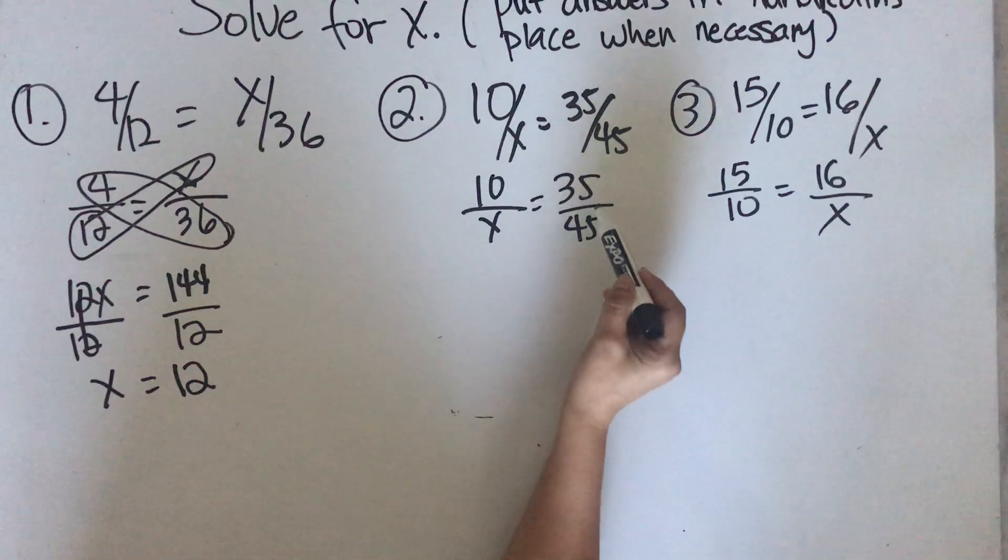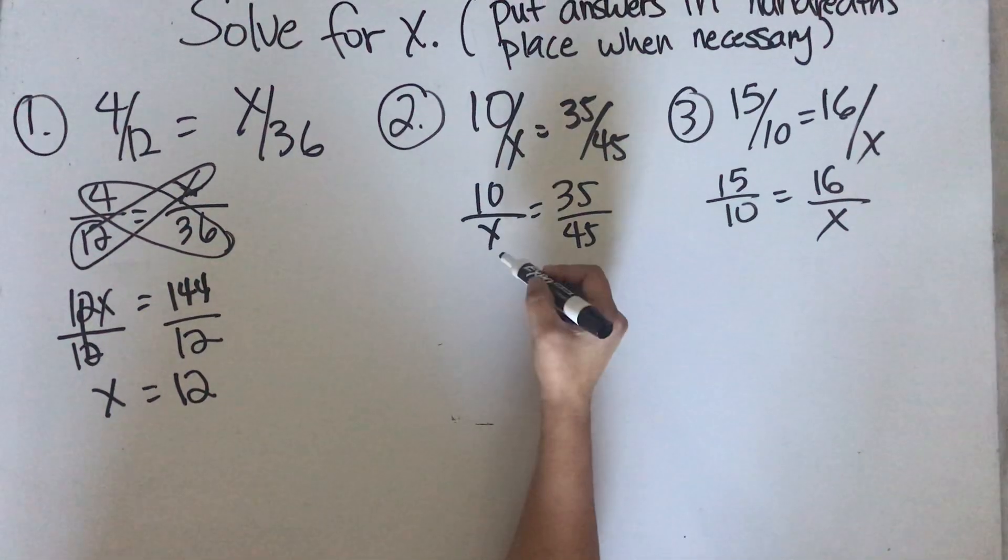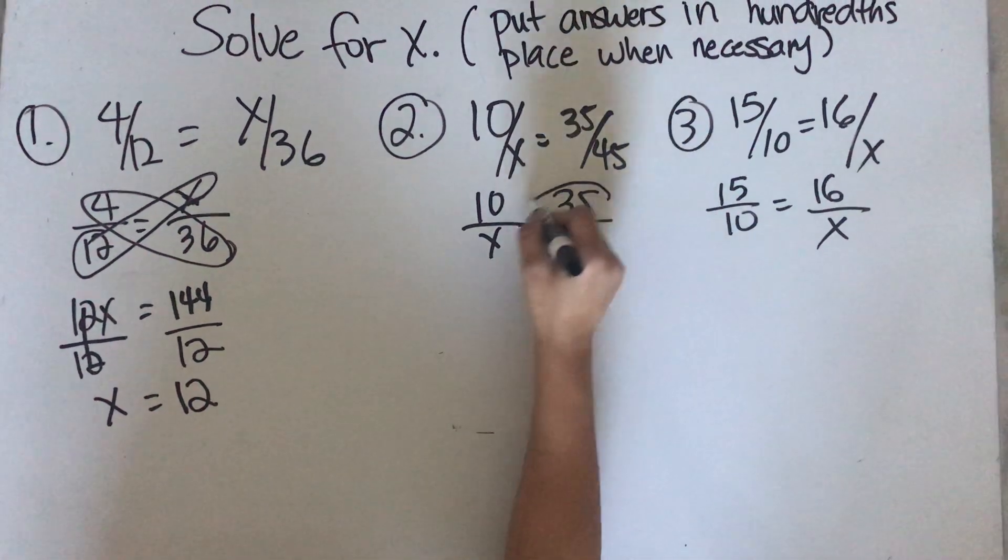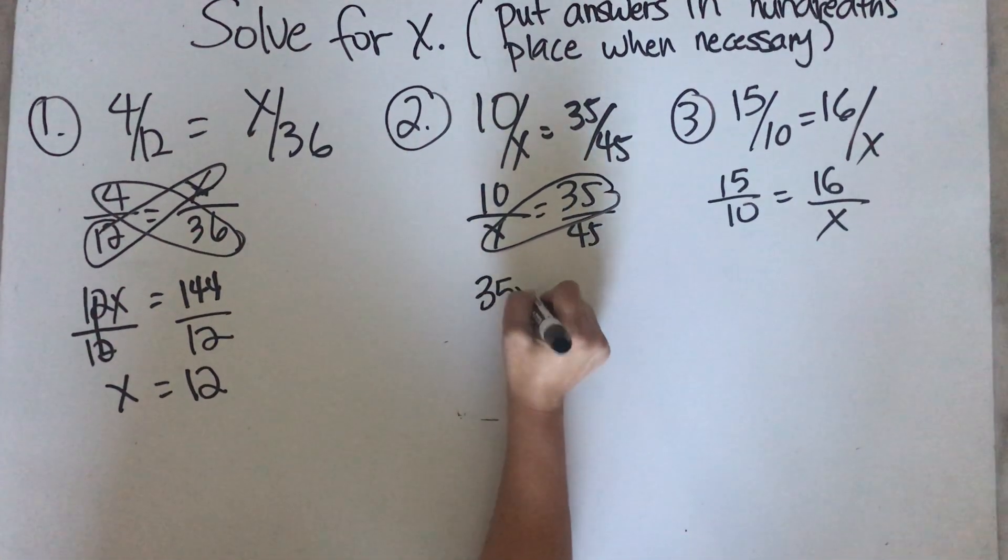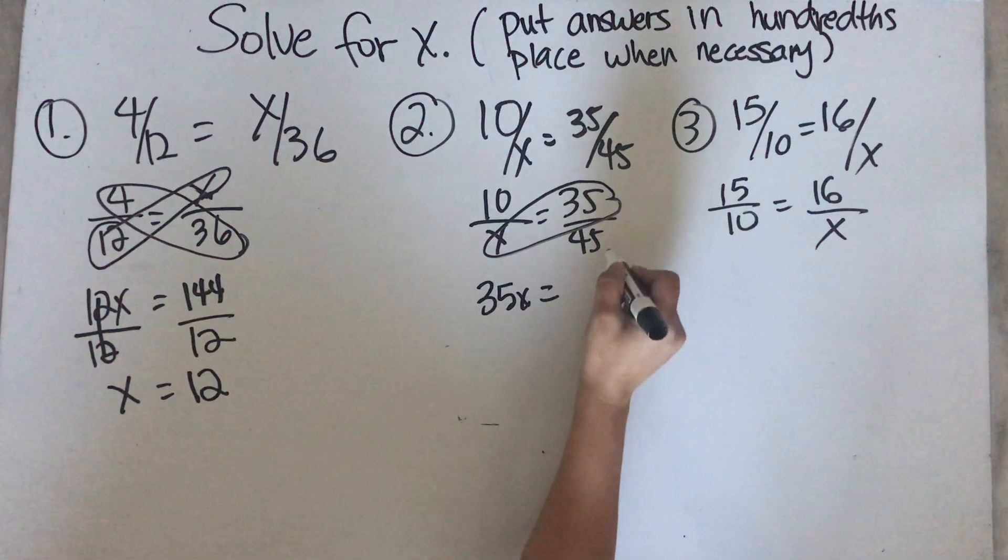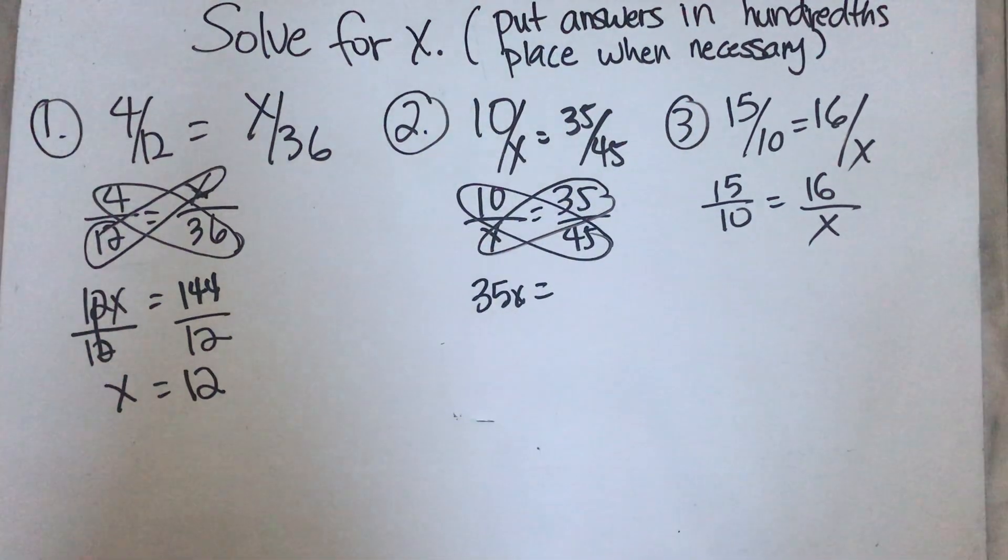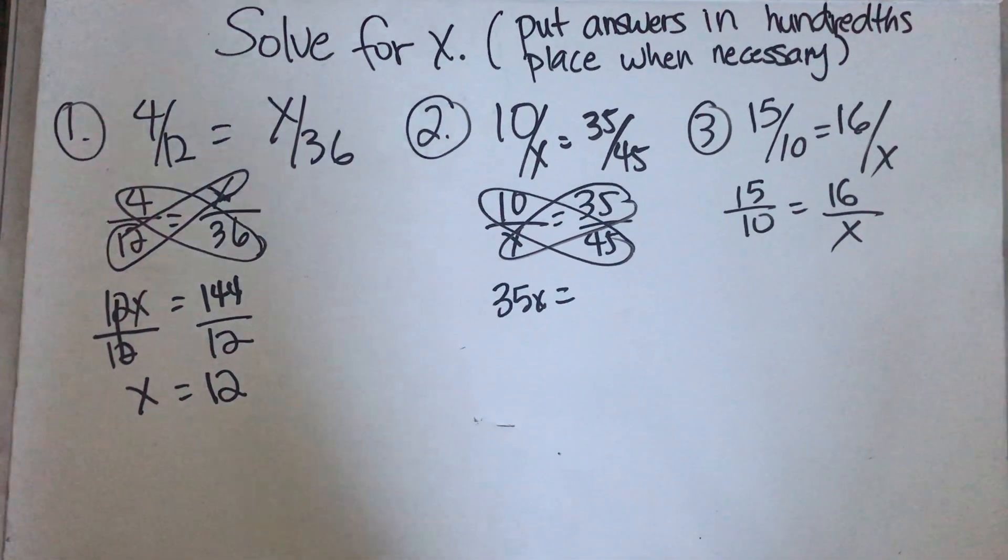10 over x, 35 over 45. Cross multiply. 35 times x is 35x.